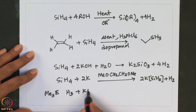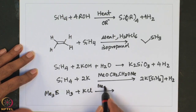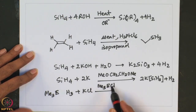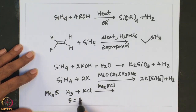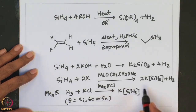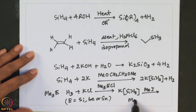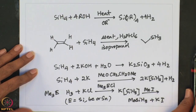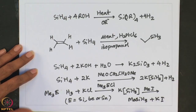A general reaction: ME3EH3 when treated with KCl in the presence of ME3ECl, where E can be silicon, germanium, or tin, initially gives a salt. This salt on further treatment with methyl iodide forms MESiH3 plus KI. One can use this method conveniently to generate different types of alkylsilanes, alkylgermanes, or alkylstannanes. SiH3Cl is a very useful reagent.